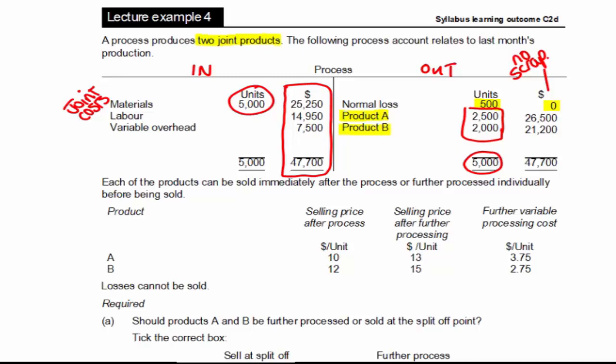So how has this been done? Well, let's think back to our formula. Our total joint costs are 47,700. And there is no scrap value. The total number of units we expect is 5,000 minus 500 normal loss units. And that comes to $10.60 per unit. Now that's how this has been allocated to these products. So let's just take product A. For product A, there's 2,500 units. And if we cost that at $10.60, we actually get back to $26,500. If we do the same with product B and you were to do 2,000 units at $10.60, you come out with $21,200.